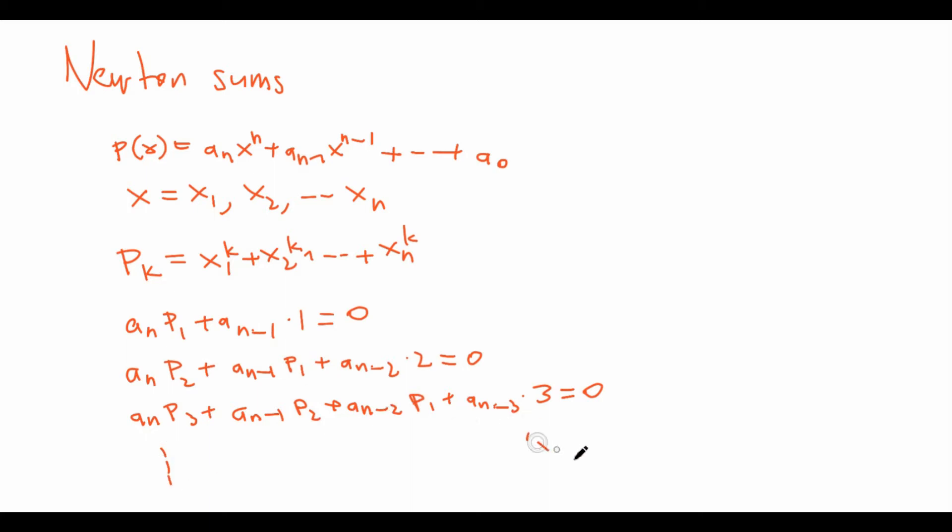And so this pattern keeps on going like this, and each equation describes a formula for the next successive P_k. So by doing the first equation, then the second equation, then the third equation and so on, we can recursively calculate what P_k is equal to.